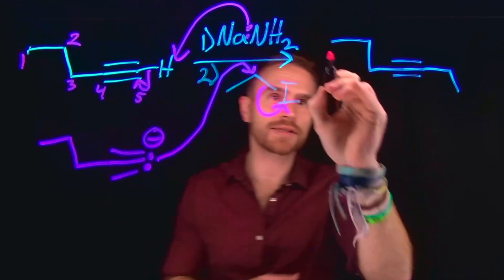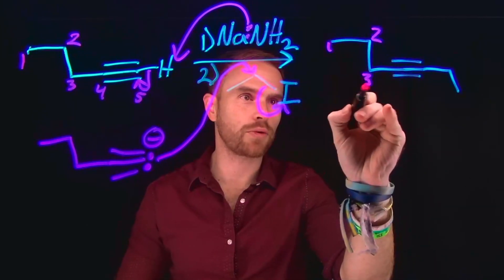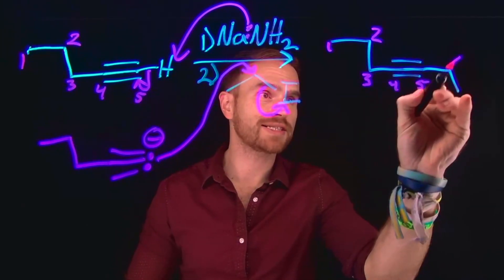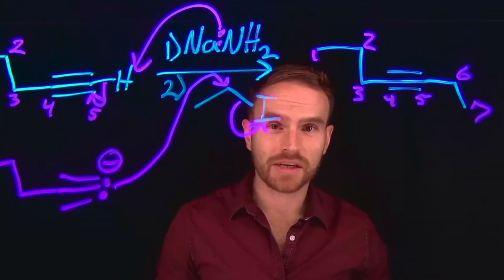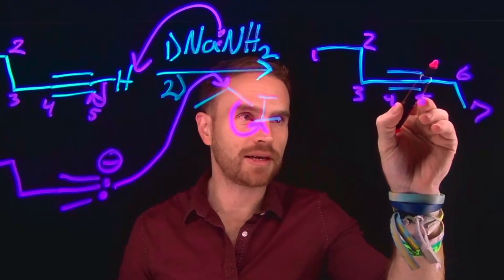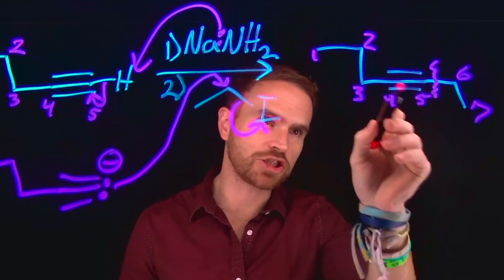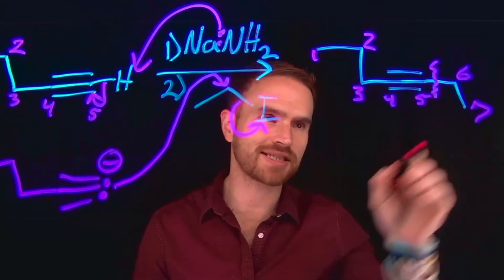and yet the product has 1, 2, 3, 4, 5, 6, 7 carbons. So we can see clearly that the synthon for this, or the junction point, is between carbons 5 and 6.